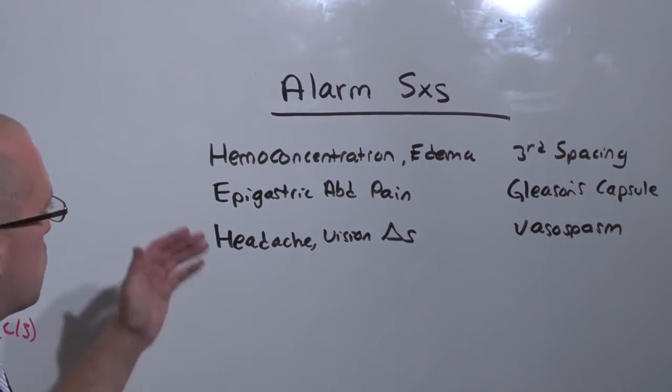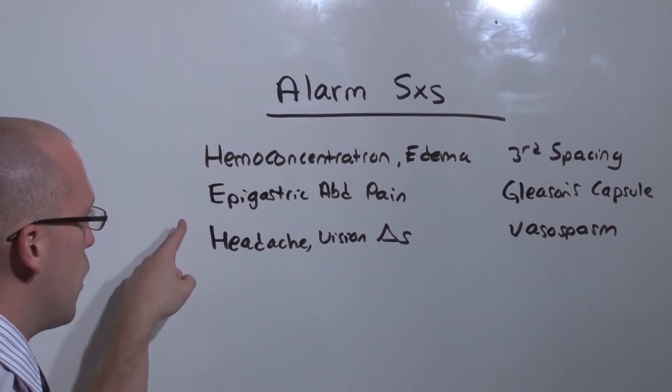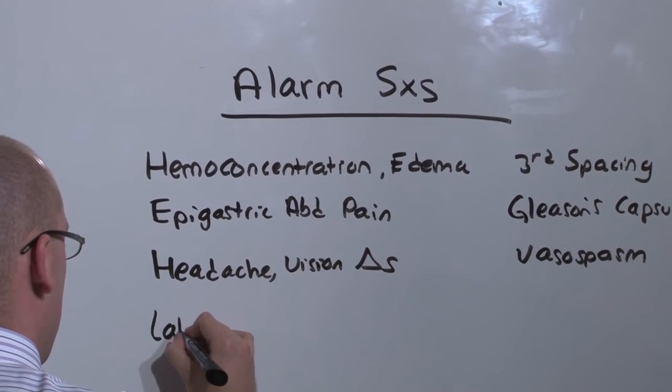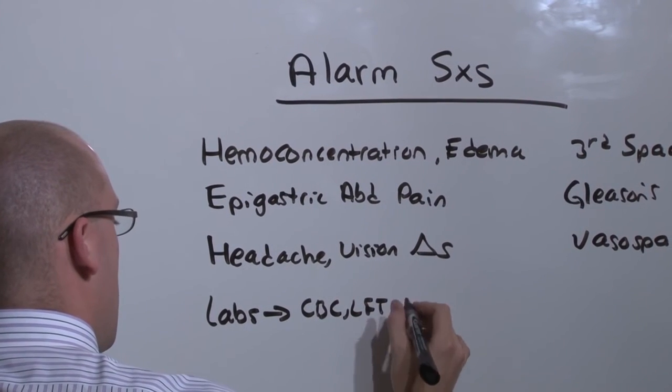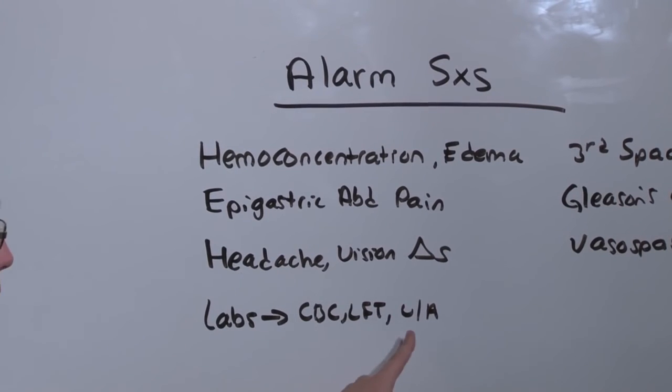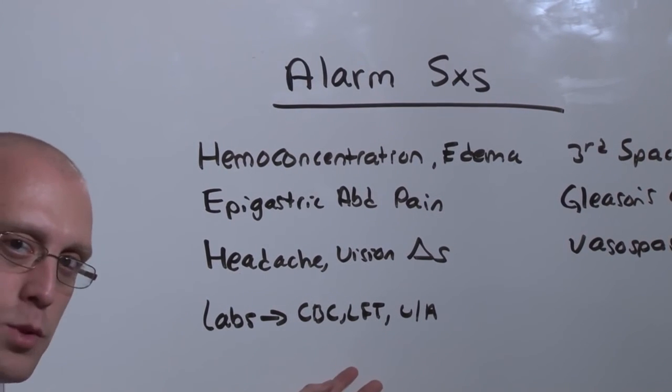If you are suspecting either pree or HELP syndrome based on some of the overlapping symptoms, what you're going to do is go ahead and get some labs. You're going to get CBC, an LFT, and a UA. Based on the abnormalities here - anemia, thrombocytopenia, and elevated liver enzymes - you have HELP syndrome.